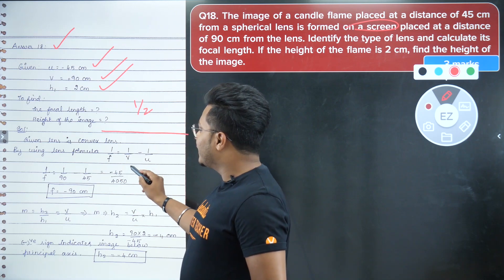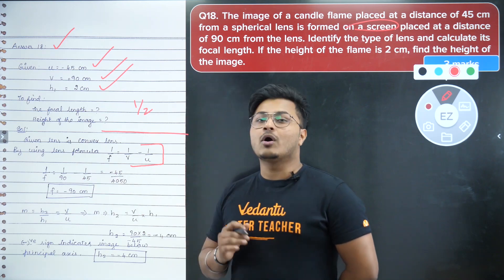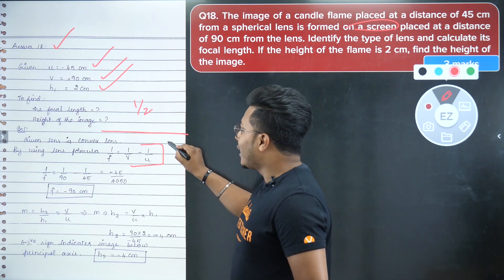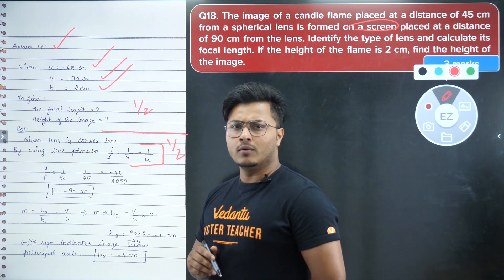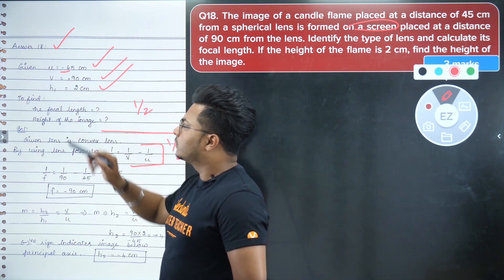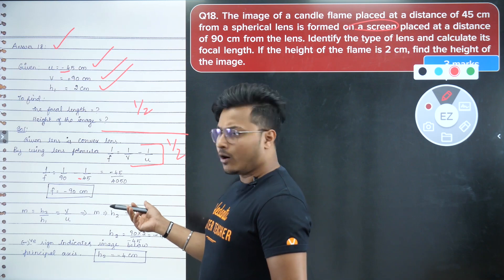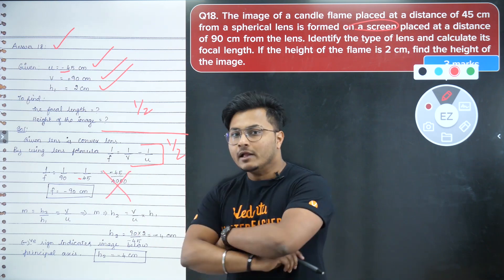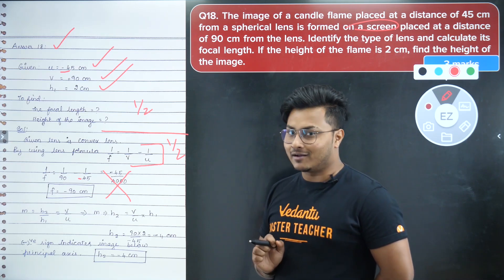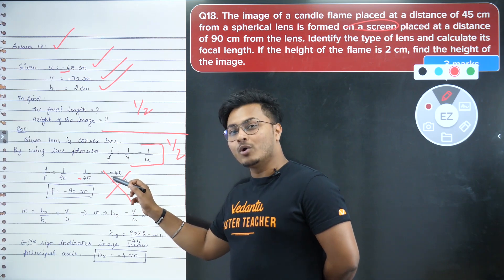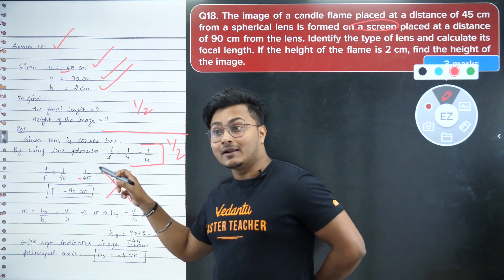The student writes: given lens is convex lens, then applies the lens formula — 1/f = 1/v − 1/u. The formula is absolutely correct, and stating 'given is a convex lens' before applying is very good practice — that gets half marks for the formula step. Then 1/f = 1/90 − 1/45... oh wait — the value of u should be negative, as u = −45, not positive 45. The sign convention is wrong, which makes the substitution incorrect. Since the input value itself is wrong, it's a calculation error — half marks cut.